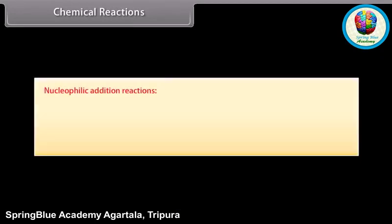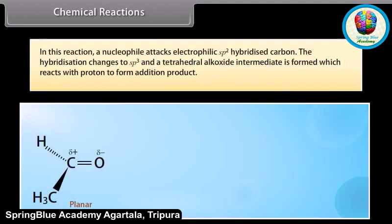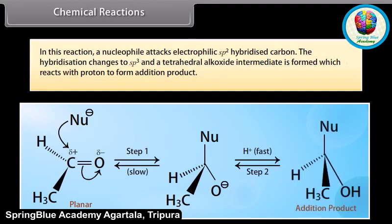Chemical reactions. Nucleophilic addition reactions. Mechanism of nucleophilic addition reactions: those addition reactions which are initiated by a nucleophile are called nucleophilic addition reactions. In this reaction, a nucleophile attacks electrophilic sp2 hybridized carbon. The hybridization changes to sp3 and a tetrahedral alkoxide intermediate is formed, which reacts with a proton to form the addition product.